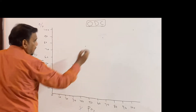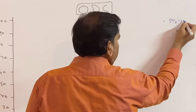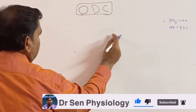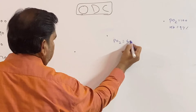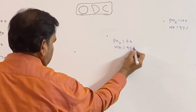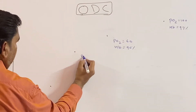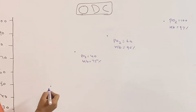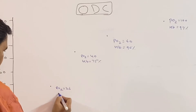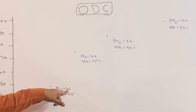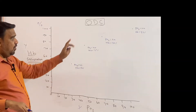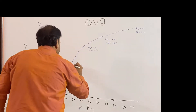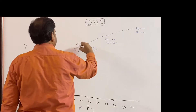So now I will write out all four key points: PO2 100 — hemoglobin saturation 97%; PO2 60 at 10,000 feet — saturation 90%; PO2 40 — saturation 75%; and P50: PO2 26 — saturation 50%. Now I am going to join these four points to draw the oxygen dissociation curve. That is all — simple.